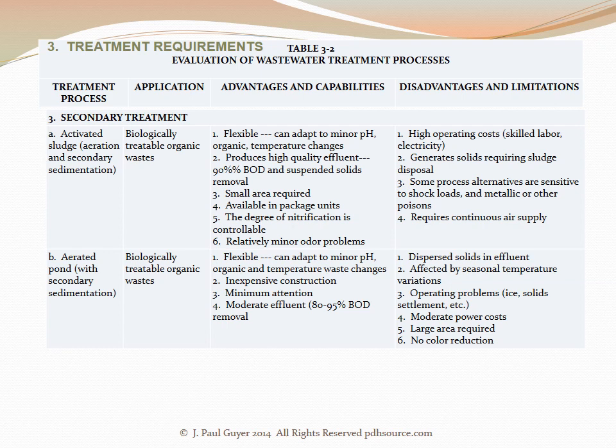The second secondary treatment process is aerated ponds with secondary sedimentation, applicable to biologically treatable organic wastes. The advantages are flexibility — it can adapt to minor pH, organic, and temperature waste changes — inexpensive construction, minimum attention required, and moderate effluent removal of 80 to 95% BOD removal. The disadvantages are dispersed solids in the effluent, it is affected by seasonal temperature variations, there may be operating problems from ice and solid settlement, there is moderate power cost, a large area is required, and there is no color reduction.